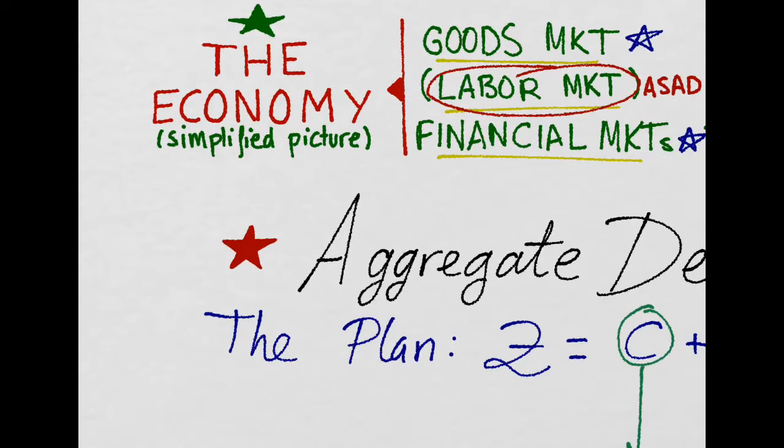That's what we'll do later when we talk about the AS-AD model. But right now, since we are only in the short run and using the IS-LM model, the labor market will not be here.